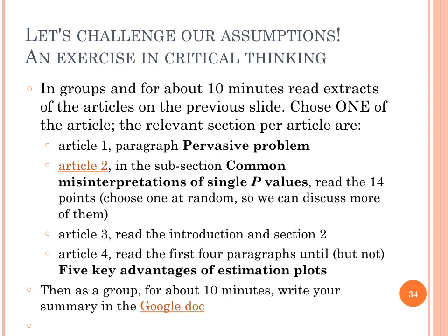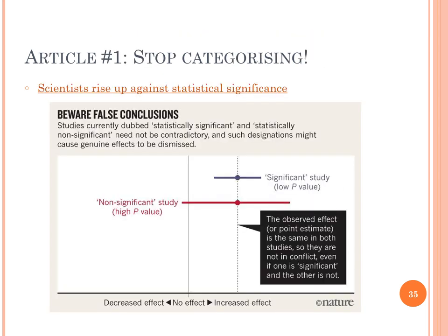In the next slide, I will summarize some of the main points of these articles. In the first article, one of the points is to stop categorizing. If a p-value is below a threshold such as 5%, there is still a 5% chance of no effect. Categorizing based on a p-value is hence fraught. Two studies, as in the example on the slide, can have the same effect but different significance — that does not, however, make the studies contradictory.